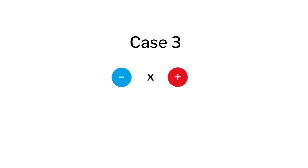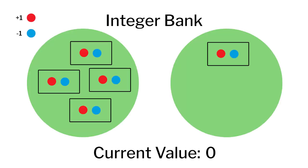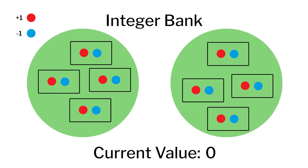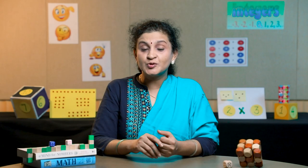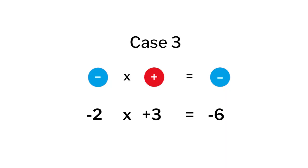Let us see case 3 — a negative integer into a positive integer, meaning 2 will be negative and 3 will be positive. We will use the integer bank with several zero pairs here. Since 2 is negative, we will be removing 3 red pins each from two cutouts from the integer bank. To do so, we will have to break the zero sets. When we count the balance, we will have a few zero sets and 6 blue pins left in the integer bank — that means the value is minus 6. Students find it exciting to know that a negative into a positive gives a negative, as they are removing pins and breaking the zero sets.